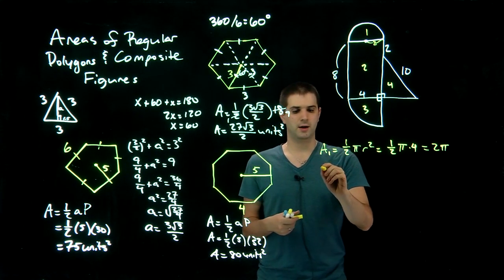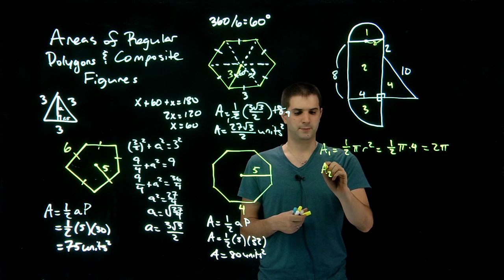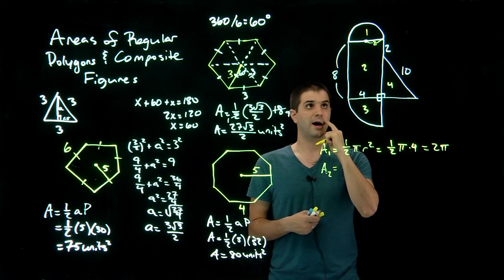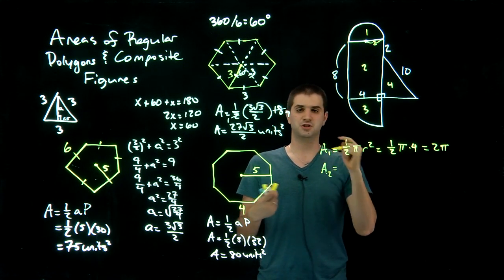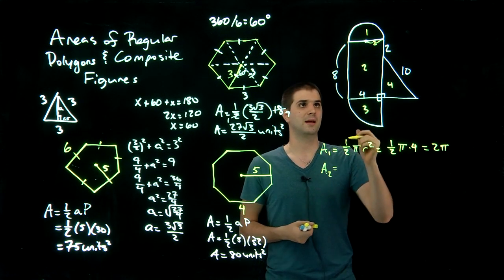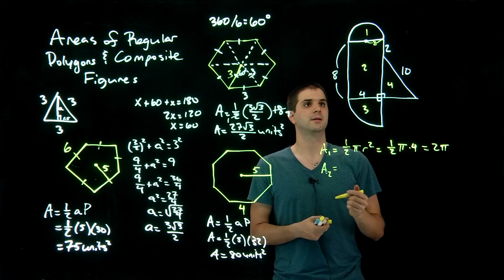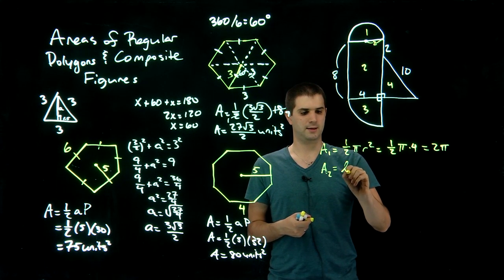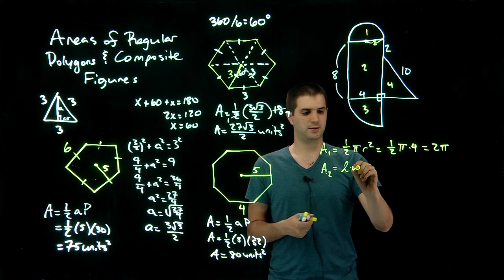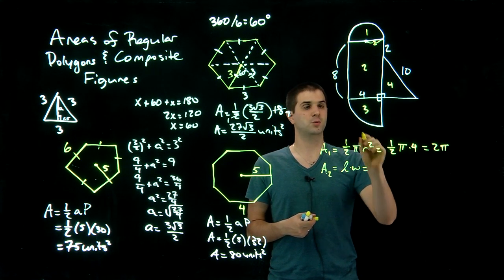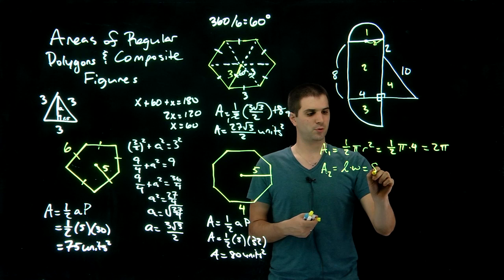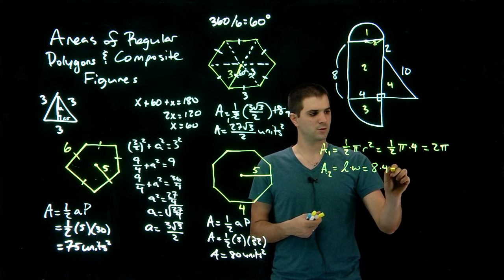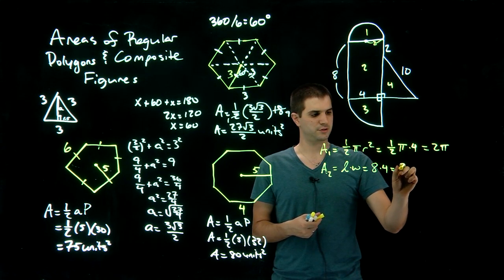The area of shape 2 is just a rectangle, so length times width, which equals 8 times 4, giving us 32.